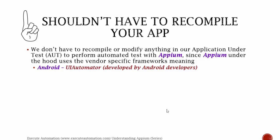Android's UI Automator is developed by Android developers. Similarly, for iOS, UI Automation is developed by Apple Inc. We'll talk more about these vendor-specific frameworks, what UI Automator is, and what UI Automation is in upcoming videos. Just understand that Android has its own vendor-specific framework, which is UI Automator, and iOS has its own vendor-specific framework, which is UI Automation developed by Apple.